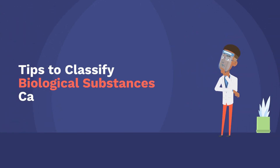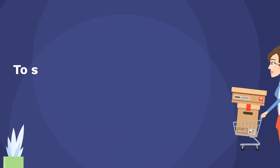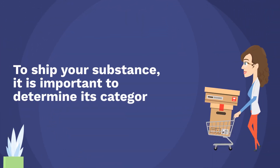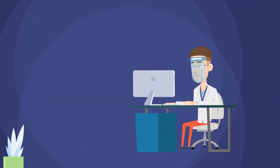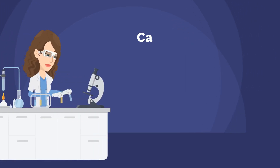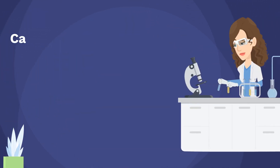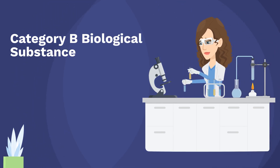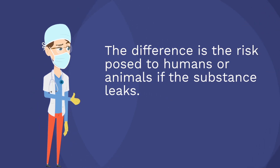Tips to classify biological substances Categories A and B. To ship your substance, it is important to determine its category. Some shipped substances can be classified as either Category A Infectious Substances or Category B Biological Substances. The difference is the risk posed to humans or animals if the substance leaks.